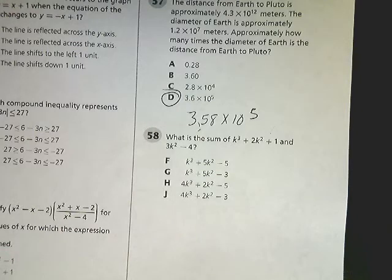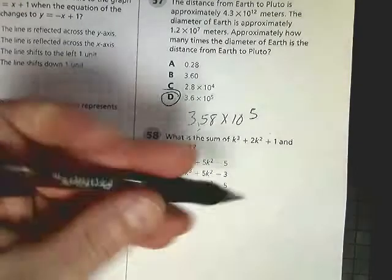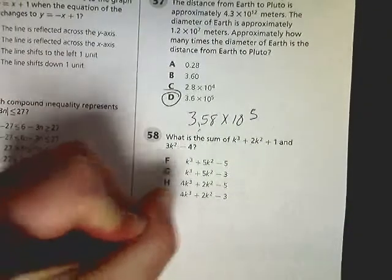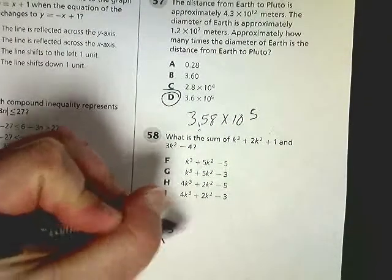Tennessee Comprehensive Practice Test for Algebra 1. This is number 58, question 58. What is the sum of k to the third plus 2k squared plus 1 and 3k squared minus 4?